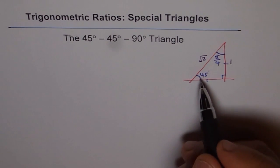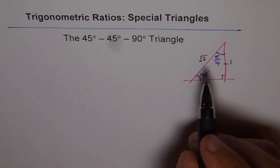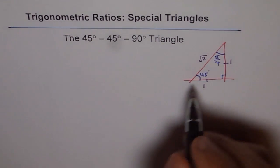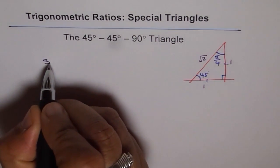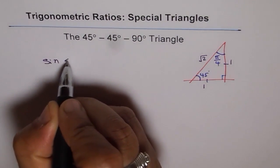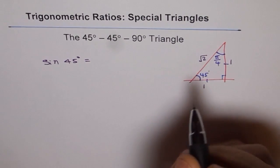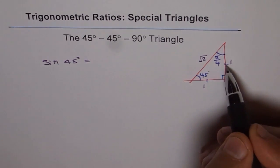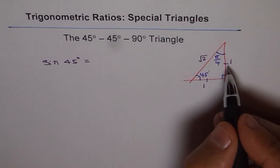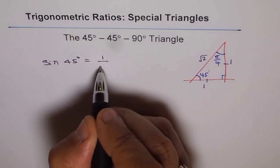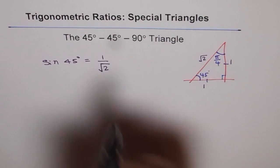So this is a very special triangle from where we can easily get values of sin 45, cos 45, and tan 45. What is sin 45 degrees? Sin 45 degrees is equal to opposite over hypotenuse, opposite is 1, so 1 over square root 2. A way to remember this is sin is opposite over hypotenuse.